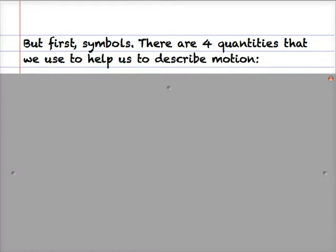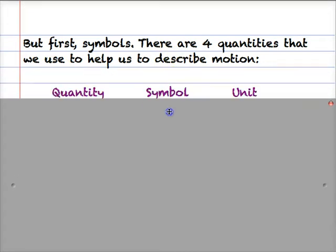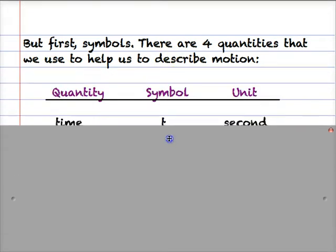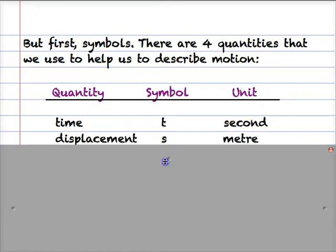Before we start deriving equations, let's take a look at the standard symbols we use. There are four quantities that we use to describe motion: the quantity, the symbol, and the unit. The first quantity is time — symbol t, unit normally seconds. Then displacement or distance travelled — we use the symbol s, normally measured in meters.